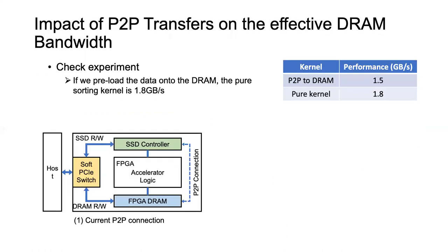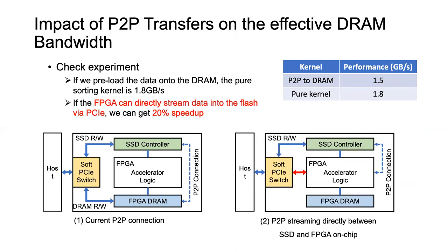Next, we also measure the impact of the P2P transfers on the effective DRAM bandwidth. By performing a check experiment, we preload the data onto the DRAM. Then the pure sorting kernel performance is higher. This indicates that if we can enable the FPGA to directly stream the data into the flash via PCIe instead of its own DRAM, we can get another 20% speedup in the sorting phase.